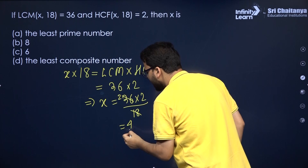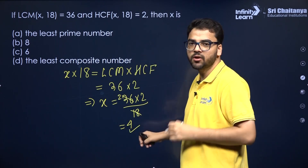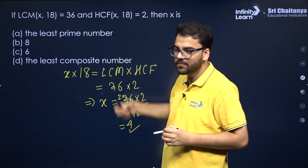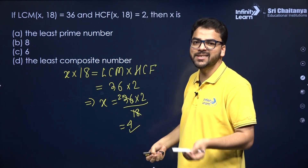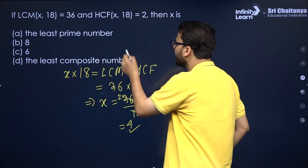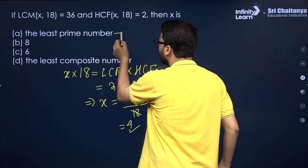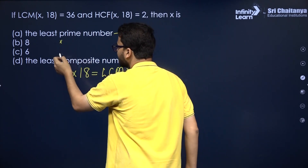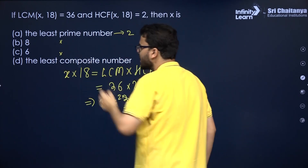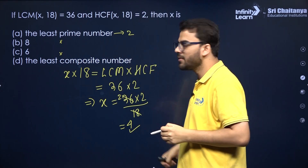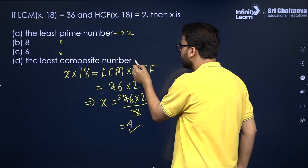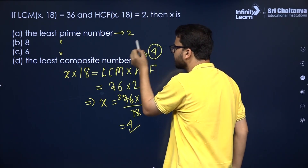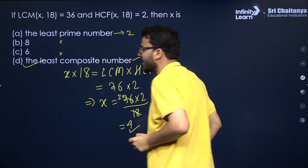X is equal to 4, but the options are not directly given as 4. The options ask about classifications: the least prime number is 2, so that's not the answer. 8 and 6 are not the answer either. The least composite number is 4 — therefore option D is correct.